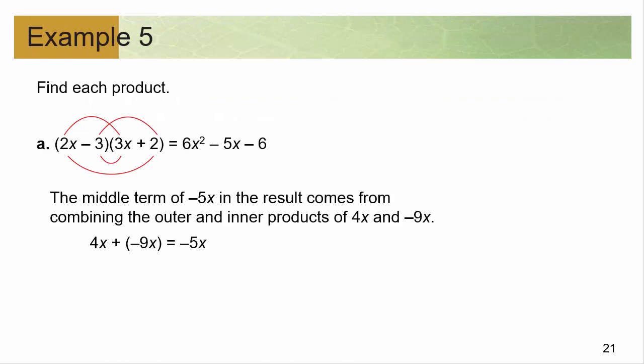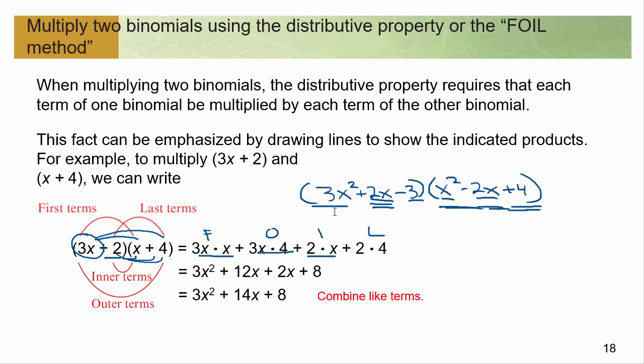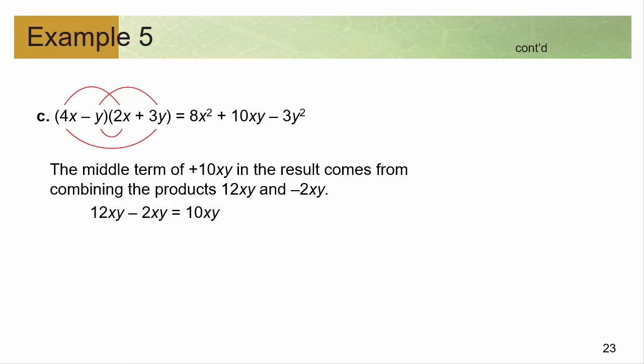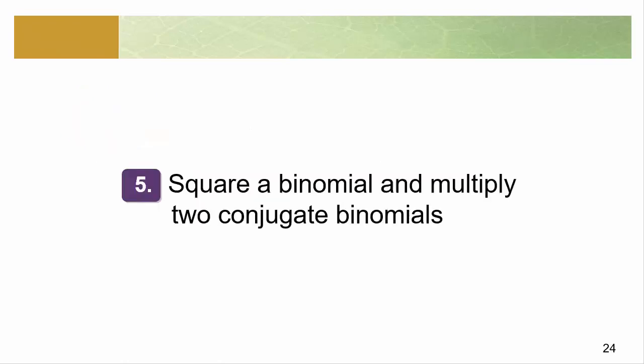Here's another example — again, just distribute it through. If you want to think of it as FOIL that's fine, but I really want you to generalize, because sooner or later you are going to have to multiply a three-term by a three-term polynomial. Or a three by two, or two by three. What I mean by a three by three is something where you've got three terms times three terms. It's nice to be able to generalize to more advanced stuff.